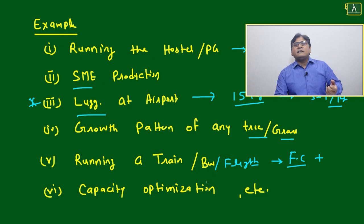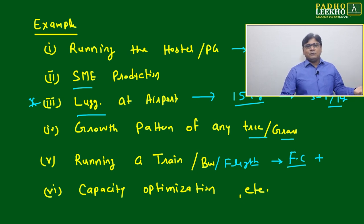At a particular point or particular number for running the train, bus or flights, you will get the break-even situation. At that point your total cost is exactly equal to total revenue. Once you are dealing with passengers more than that you will be in profit. If you are dealing with less than that passenger you will be in loss.